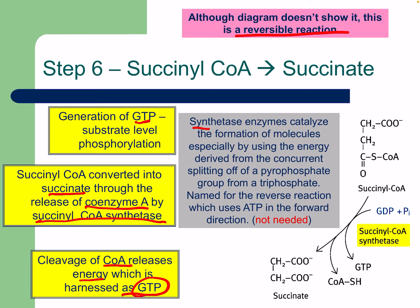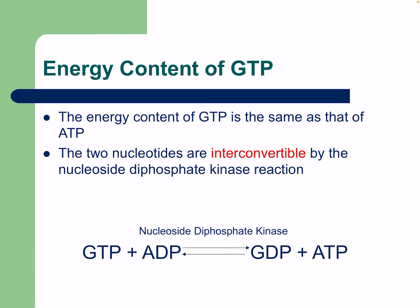Synthetase enzymes catalyze the formation of molecules using energy from concurrent splitting of a pyrophosphate — that's why this reaction is named for the reverse direction, which uses ATP. Regarding energy content: GTP has the same energy content as ATP. The two nucleotides are interconvertible via the nucleoside diphosphate kinase reaction, so GTP and ADP can be converted to GDP and ATP.